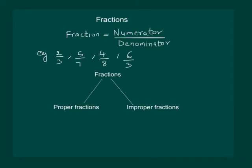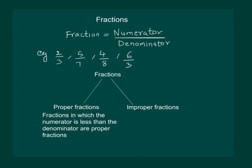Fractions are further classified as proper fractions and improper fractions. Fractions in which the numerator is less than the denominator are called proper fractions. For example, 2 by 3 is a proper fraction, 5 by 7 is a proper fraction, and 4 by 8 is also a proper fraction.